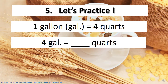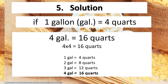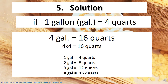If 1 gallon equals 4 quarts, how many quarts is 4 gallons? Solution: If 1 gallon equals 4 quarts, then 4 gallons equals 16 quarts. You just multiply 4 gallons by 4 quarts. Or you can use this: 1 gallon = 4 quarts, 2 gallons = 8 quarts, 3 gallons = 12 quarts, then 4 gallons = 16 quarts.